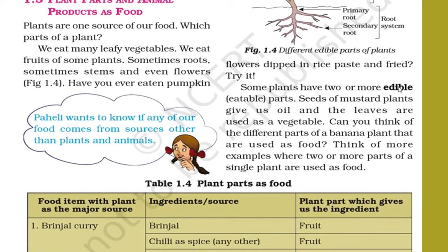Some plants have two or more edible parts — edible means eatable, that can be eaten by us. Not only one but two or more parts of the plant can be eaten — it may be root, fruit, flower, or even the stem. Seeds of mustard plants give us oil and the leaves are used as vegetables, so two parts of the mustard plant are edible.